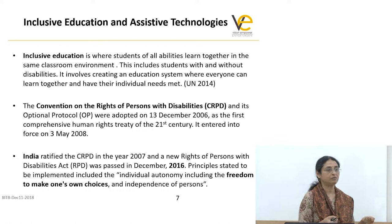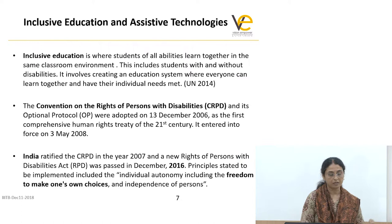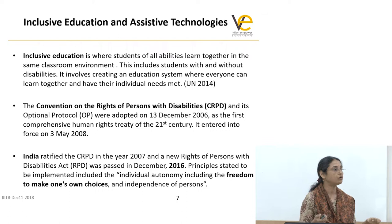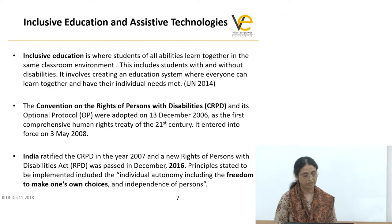Once it became a development issue, education was recognized as one of the most critical elements. The United Nations came up with the acknowledgement that inclusive education is required for all, where all students can study together in the same classroom. Accessible and assistive technologies needed to get rolled out, and all countries needed to ratify this. By 2007, India also ratified it.